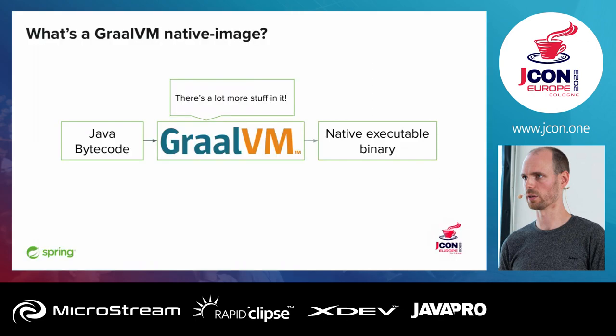What's a GraalVM native image? It essentially takes your Java bytecode and transforms it into a native executable binary. This native executable binary can then run without a JVM and it's platform specific — that means you need to execute it on the machine you build it on, like on a Mac or on Linux. GraalVM contains a lot more stuff, for example the Truffle framework where you can run Ruby alongside Java. But every time I talk about GraalVM in this talk, it's about the native image part.